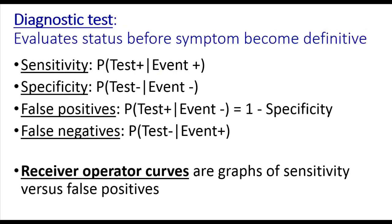We use conditional probabilities to evaluate diagnostic tests. A diagnostic test is some sort of measurement or assay that you use to determine a disease state before you have definitive symptoms. The way we evaluate diagnostic tests is to describe their sensitivity and their specificity.